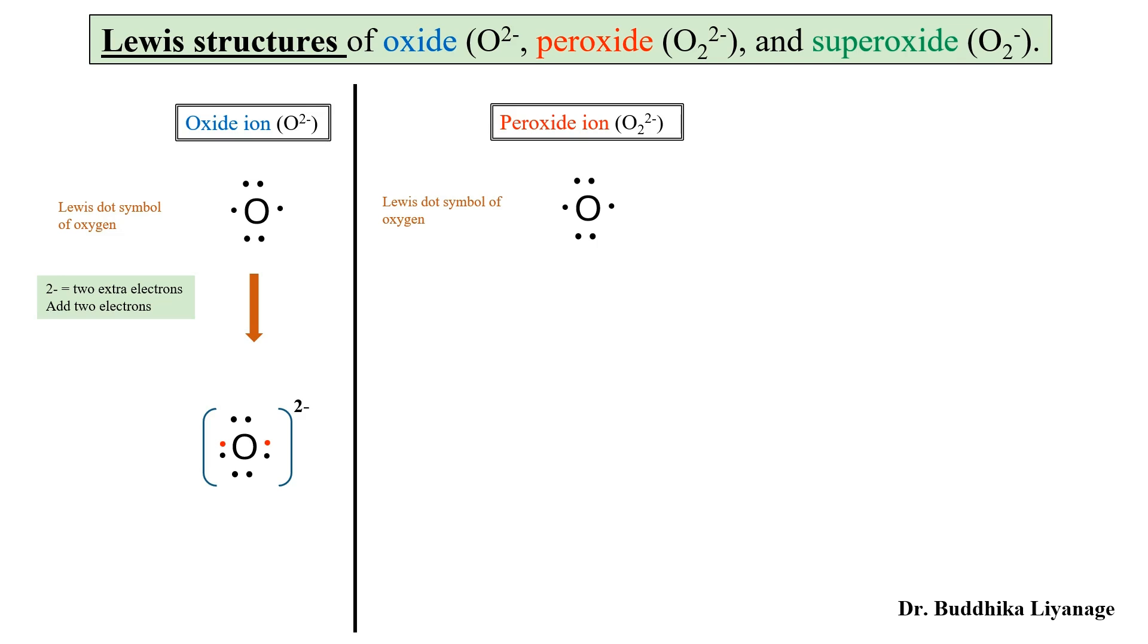That is our O₂ part, and then two minus means we need to add two more extra electrons. Then the structure looks like this: two singly occupied electrons make a covalent bond, and the other singly occupied electrons on each oxygen paired with the extra added electrons indicated in red color. This is peroxide ion with charge two minus.